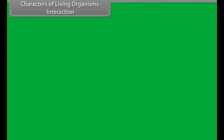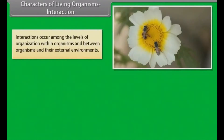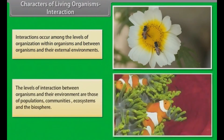Interactions occur among the levels of organization within organisms, and between organisms and their external environments. The levels of interaction between organisms and their environment are those of populations, communities, ecosystems, and the biosphere.